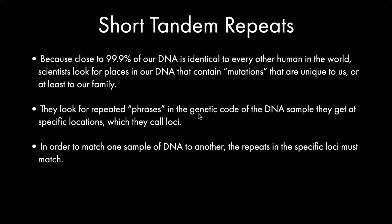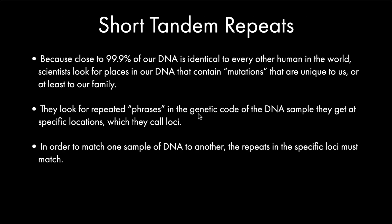In forensics, what they're doing is they're looking for what are called short tandem repeats. Because close to 99.9% of our DNA is identical, they're looking for mutations that are unique to each person. So what they do is they look for repeated phrases within this genetic code and they look at them in specific locations, which they call loci. In order to match one sample of DNA to another, the repeats of those letters in that specific location must match.